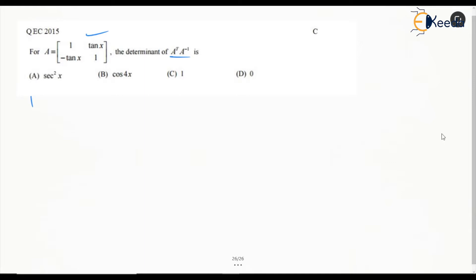Obviously, we can see that determinant of A is not equal to 0 because it is going to be 1 plus tan square x which will be sec square x and it cannot be 0.